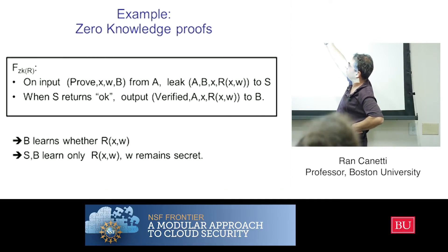And here the information that has been revealed is the fact that the sender has such a w. Both the simulator and the receiver gets this fact. But the rest of the information, which is the w itself or anything else, is being hidden, right?